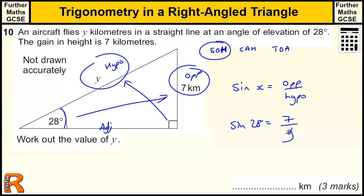Now we could go through a process where we multiply by the y to get y times sine 28, and then divide by sine 28 to get y equals 7 over sine 28. Or there's a nice little rule that you can use that is very useful to do with fractions across an equation.